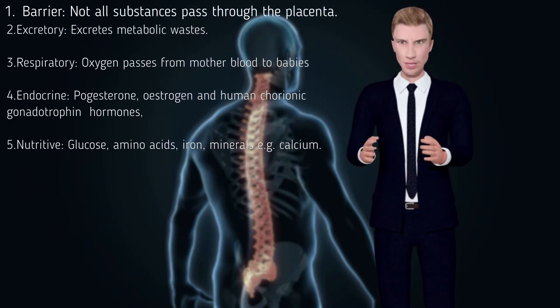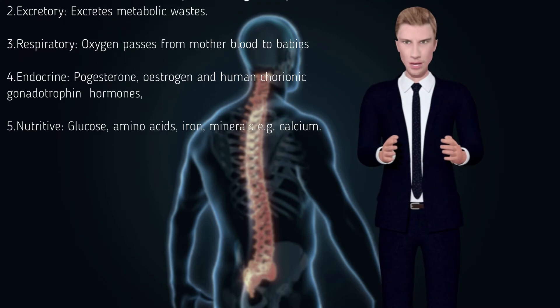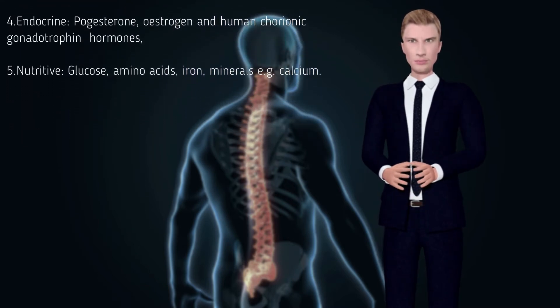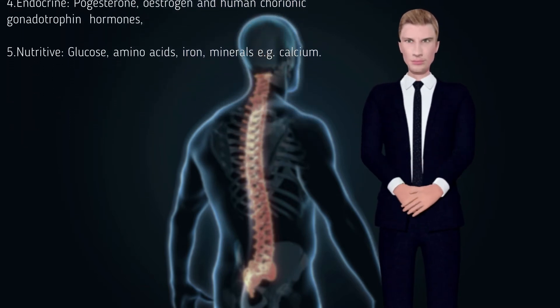4. Endocrine — progesterone, estrogen, and human chorionic gonadotrophin hormones. These maintain the pregnancy.